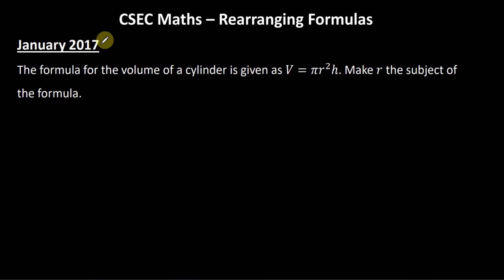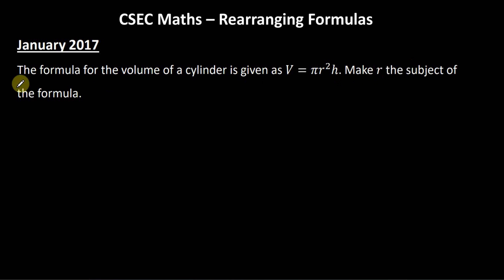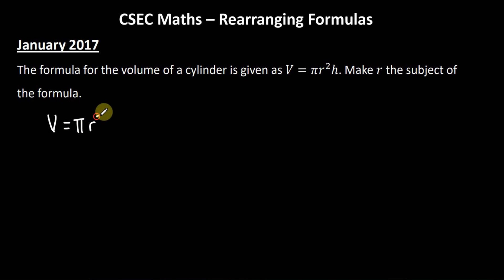The first question was given on the January 2017 Paper 2 exam. The formula for the volume of a cylinder is given as V = πr²h, and they want us to make r the subject of the formula. That means they want us to get r on one side of the equal sign by itself.